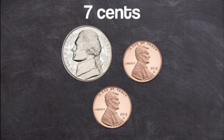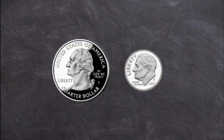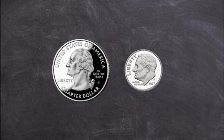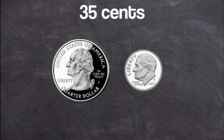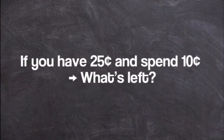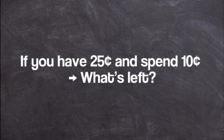One nickel is five cents and two pennies is two cents. And if you have one quarter and one dime, what's your final value? If you got 35 cents, you're correct, because one quarter is 25 cents and one dime is 10 cents. If you have 25 cents and you spent 10 cents, what's left?